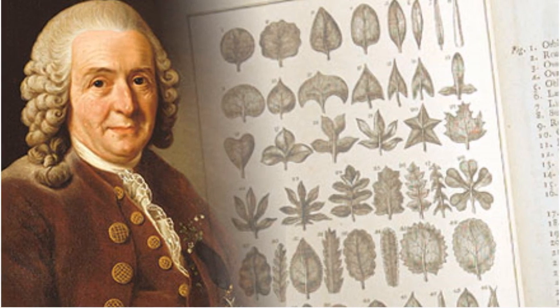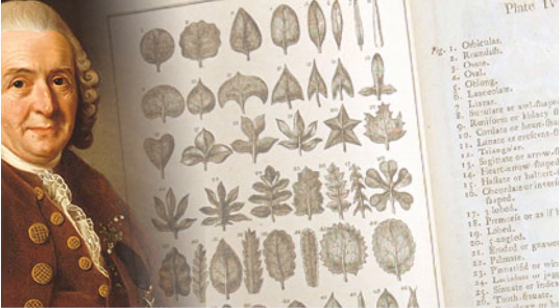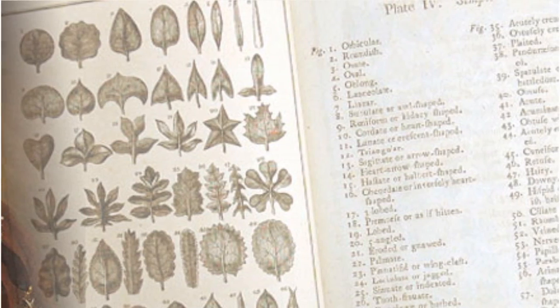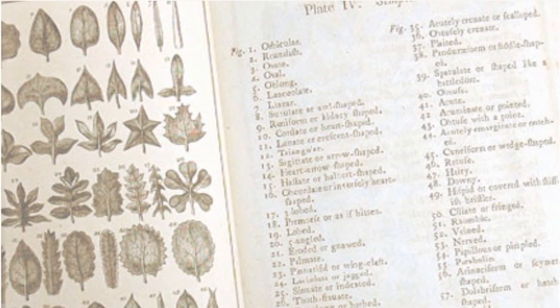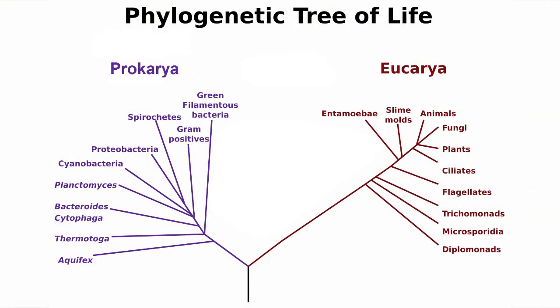When early scientists tried to classify all known life forms, they lumped them into the same groups or divided them into different categories based on compared characteristics. The most basic division is between prokaryotes and eukaryotes. It's basically two groups between bacteria and everything else.